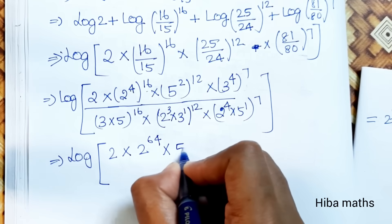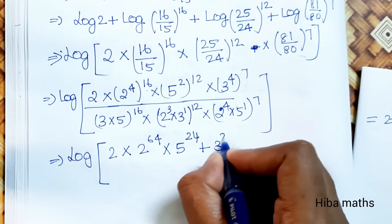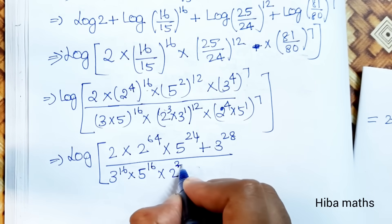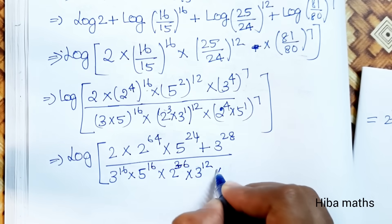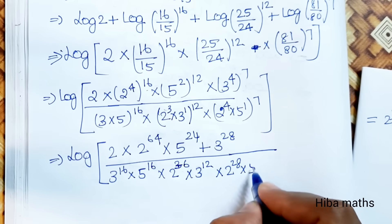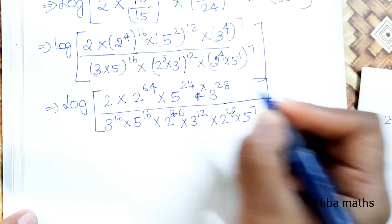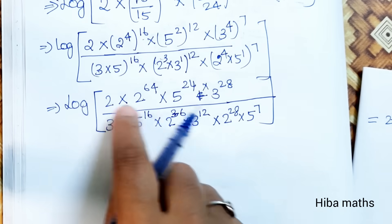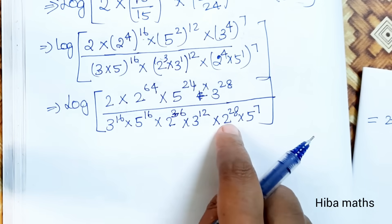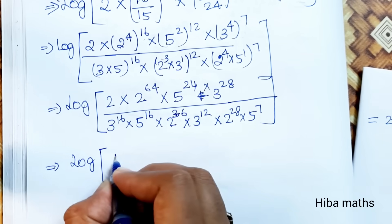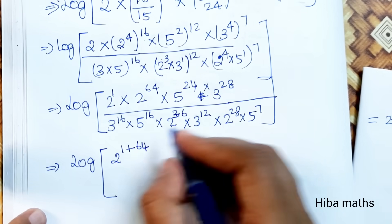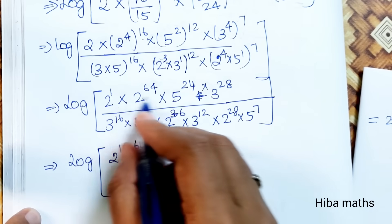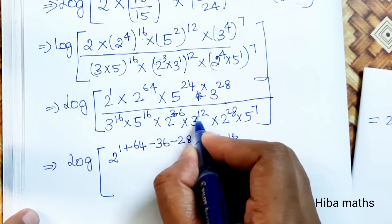Simplifying the exponents: 2 power 64, 3 power 28, 3 power 6, 2 power 36 into 3 power 12, into 2 power 28 into 5 power 7. Now collecting exponents: for base 2: 64 minus something; for base 3: 28 equals 28, equals 16 equals minus 12; for base 5: add 5. Then: 3 power 28 minus 28 equals 3 power 0.